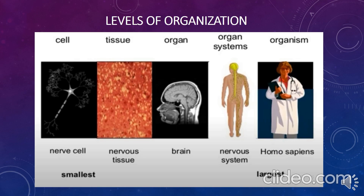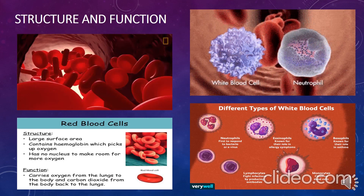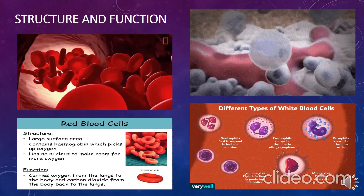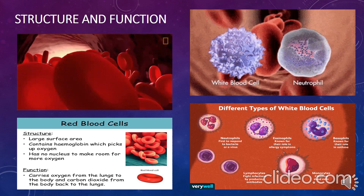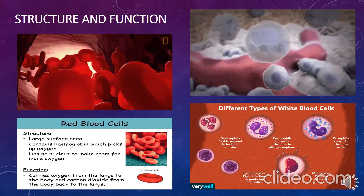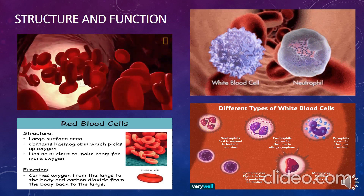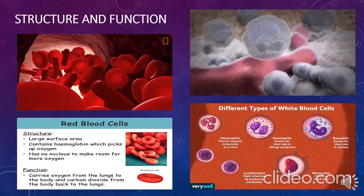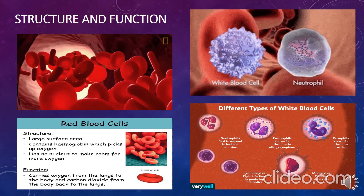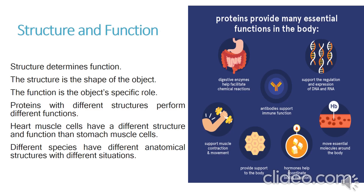Structure and function are connected at every step of the biological hierarchy. Different cells have specific components that help them carry out their duties. Red blood cells, which carry oxygen, are formed differently than white blood cells that fight infection. Structure determines function: the structure is the shape of the object, and the function is the object's specific role. Proteins with different structures perform different functions, and heart muscle cells and different species have different anatomical structures.